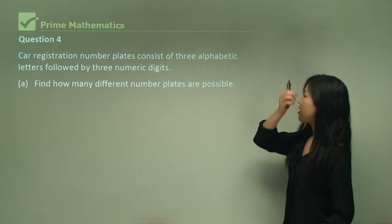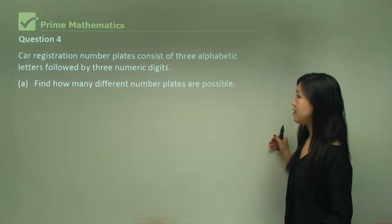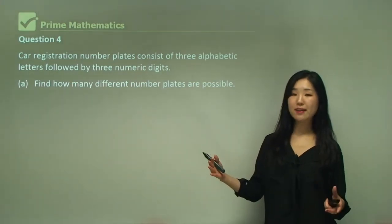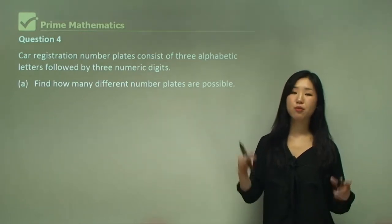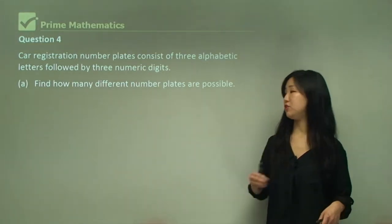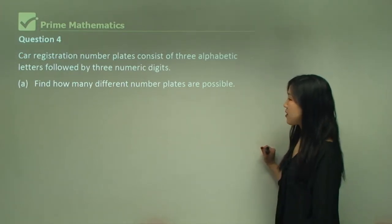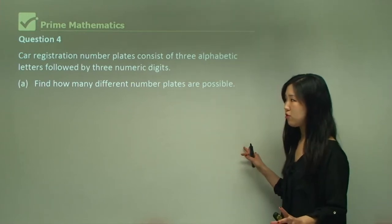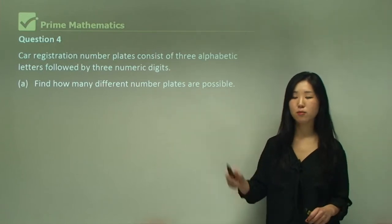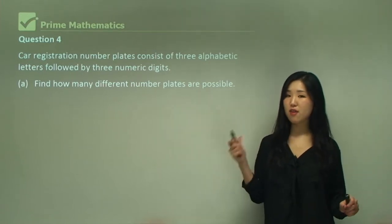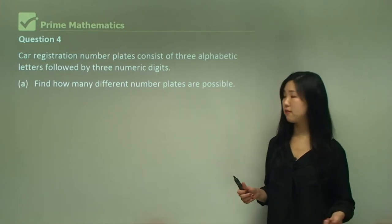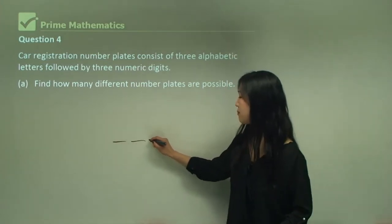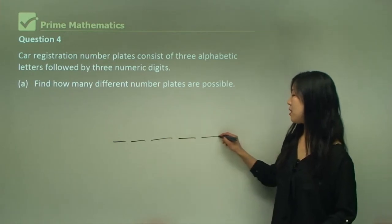Question four: car registration number plates consist of three alphabetic letters followed by three numeric digits. So basically it's a number plate with three alphabets at the beginning and three numbers at the end, and the numbers must be single digits. Part A: find how many different number plates are possible. I'm going to lay out spots: alphabet, alphabet, alphabet, number, number, number.